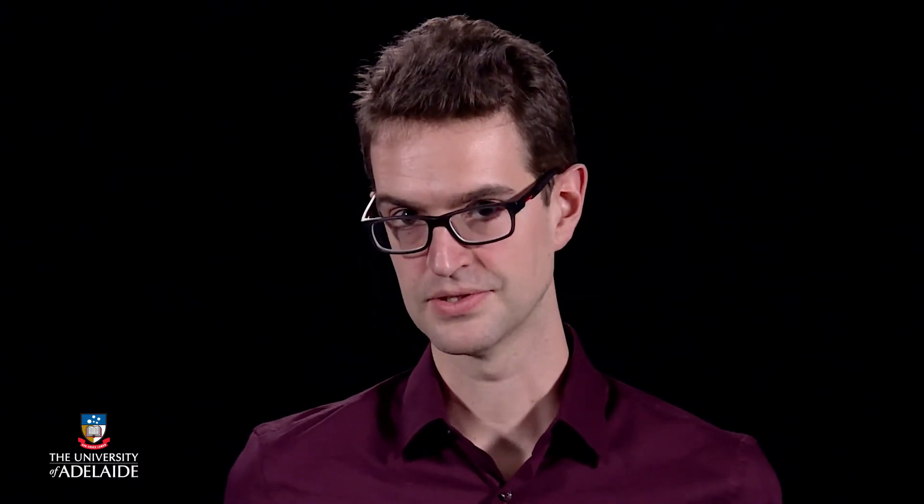Now, here's a plot to visualize these confidence intervals. Each line is a sample, with the dot representing the sample mean and the lines giving the 95% confidence interval. The red line is the truth, a population mean of 10.